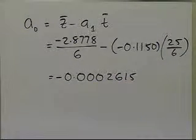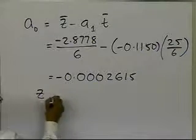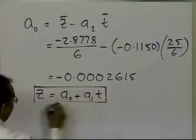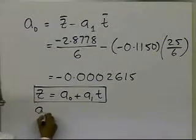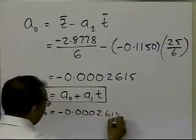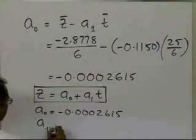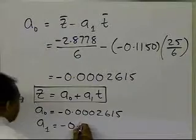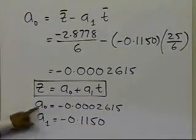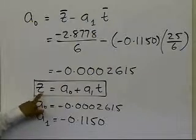So basically what I have is, of the transformed data, for which I use linear regression formula z is equal to a0 plus a1 t, I get a0 is equal to minus 0.0002615, I get a1 equal to minus 0.1150. But these are the constants of the linear regression model of z versus t.